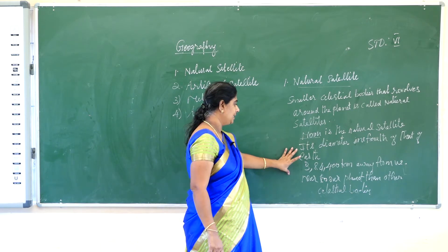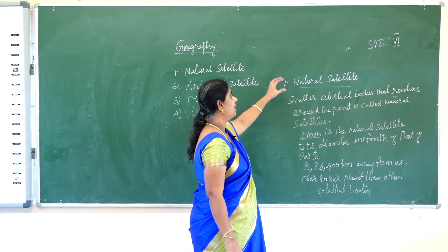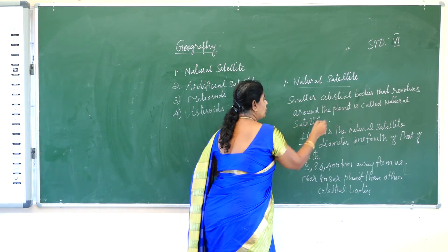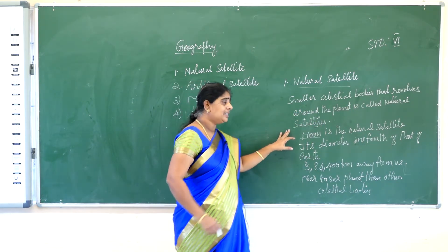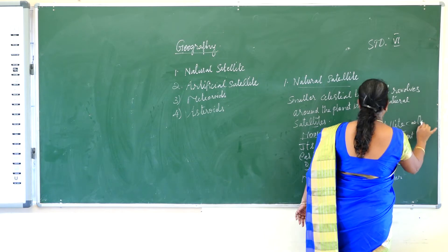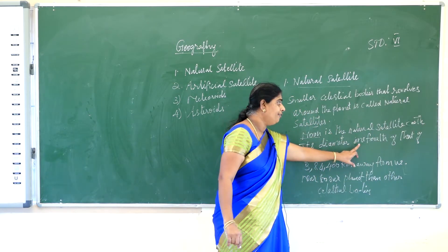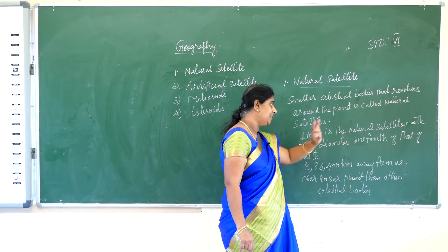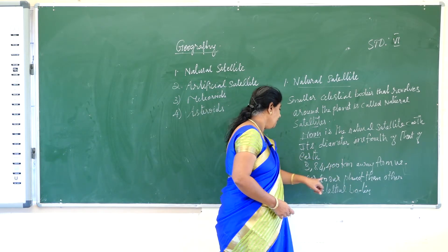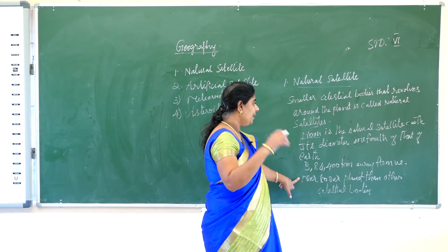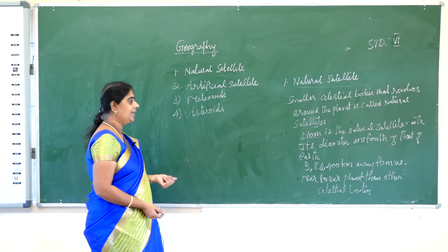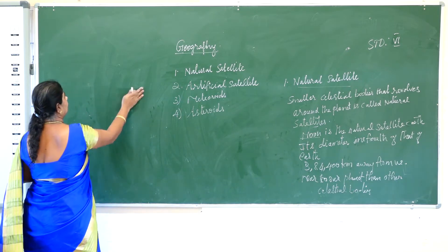Natural satellites are smaller celestial bodies that revolve around the planet. The moon is the natural satellite of our earth. Its diameter is one fourth of that of the earth, and it is 3,84,400 kilometers away from the earth. That is why it looks very big — because it is closer to our planet than other celestial bodies.